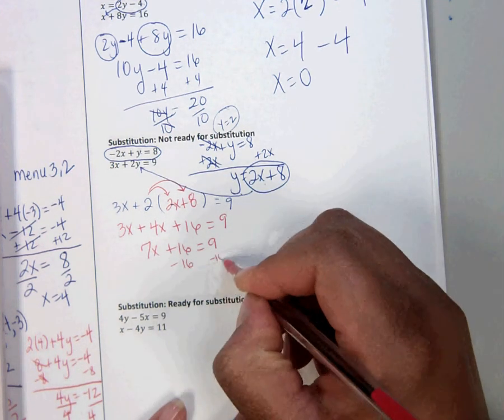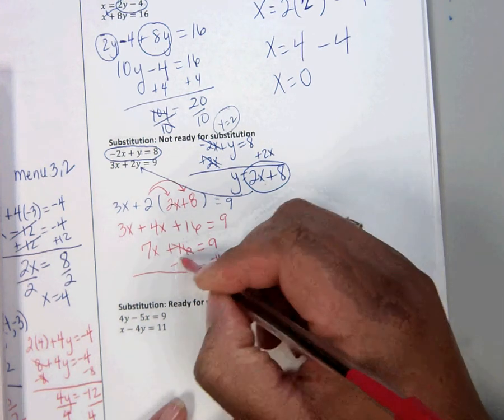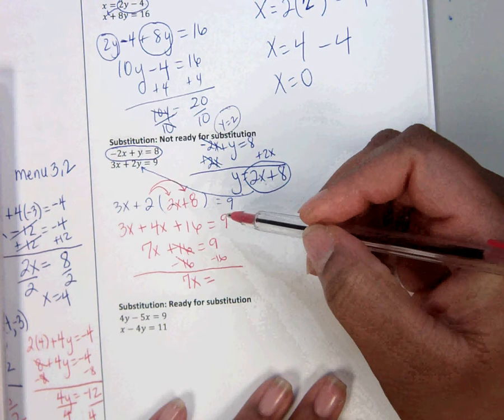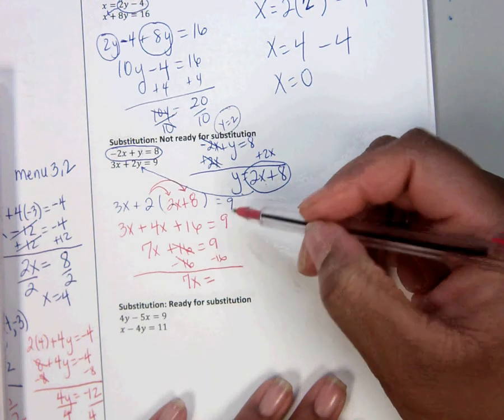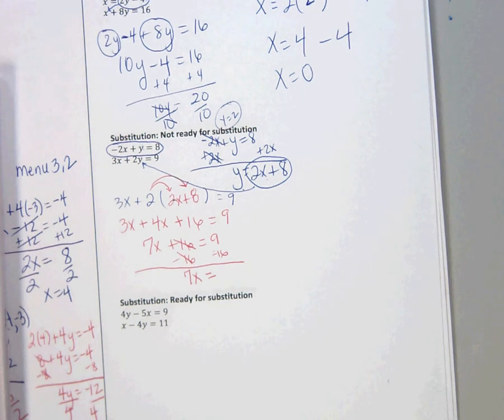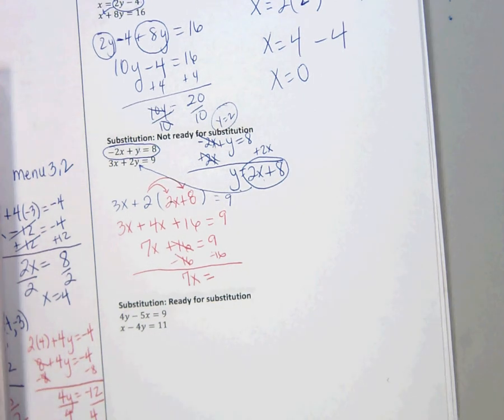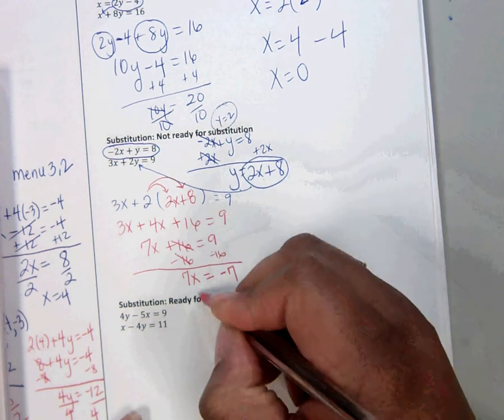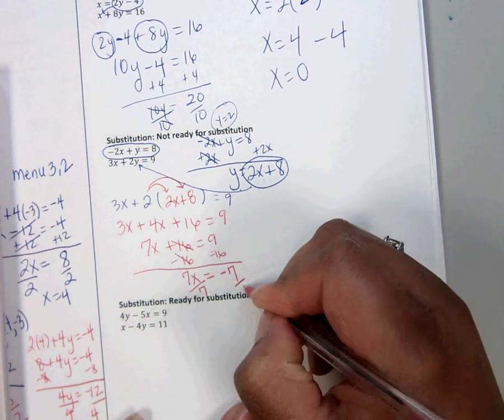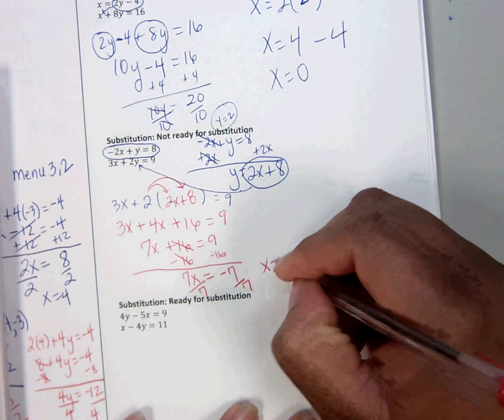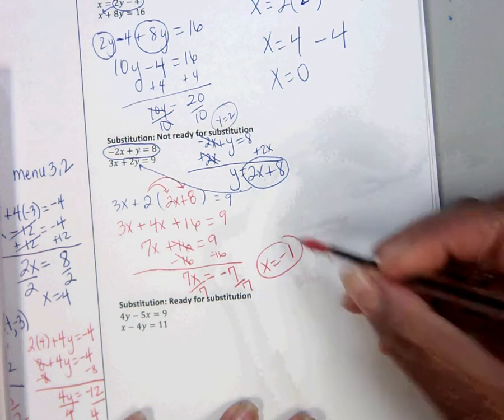Subtract 16 on both sides. 7x equals, what is 16? 9 minus 16. And negative 7. Good job. Divide by 7. And what is that? Is it 0 or negative 1? It's negative 1. So now we have x.